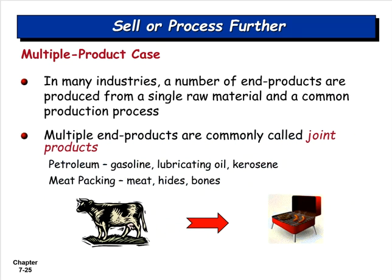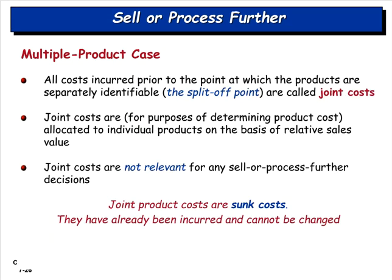Sometimes companies have multiple products that can be made from one single input. For example, petroleum yields gasoline, oil, and kerosene; in meat packing, every part of the animal is used. In these multiple-product cases, all costs incurred before the point where products split off are called joint costs. Joint costs are not relevant for sell-or-process-further decisions because they occur no matter what you decide to make — they are considered sunk costs and should be ignored.